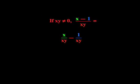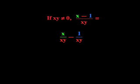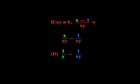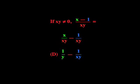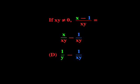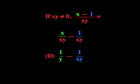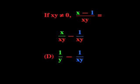We can simply split the large fraction into two small fractions with a common denominator of xy. Now we can cancel the x's on the top and bottom of the left hand fraction and come up with our right answer D: 1 over y minus 1 over xy.